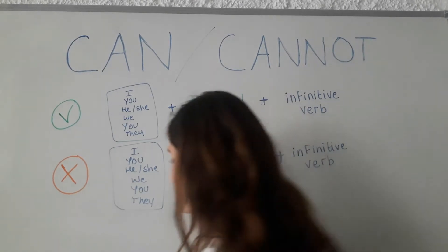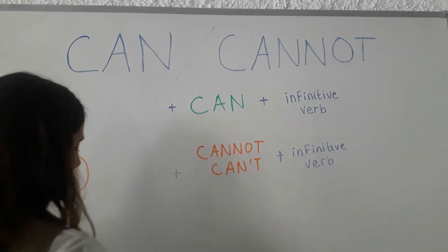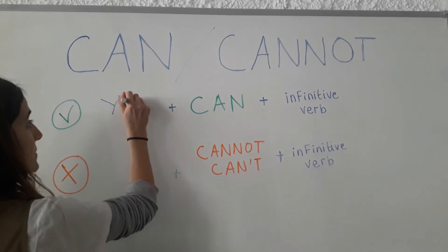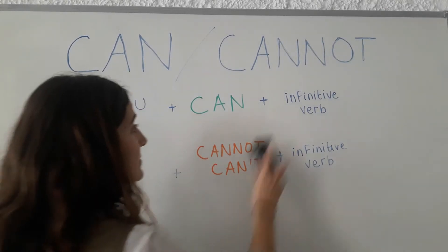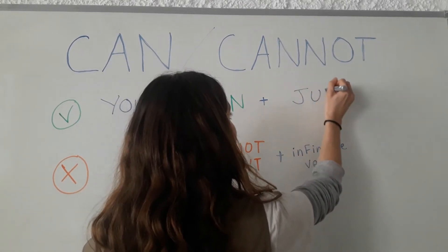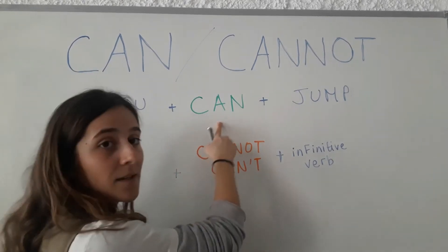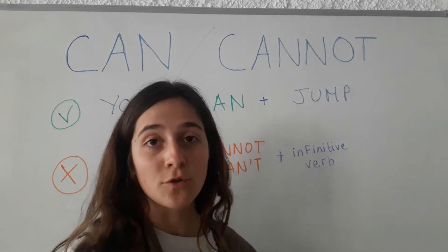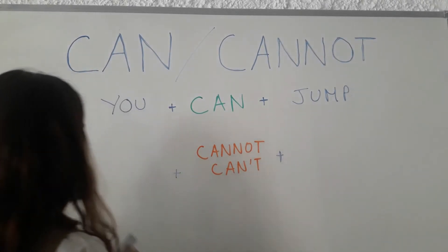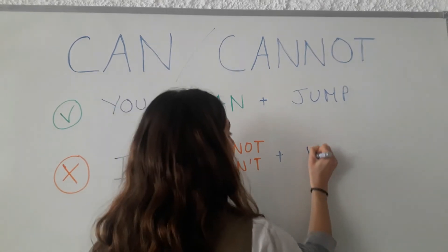I give you an example: you — the pronoun — plus can, plus jump — the verb, which is not conjugated. The same applies for the negative form: I cannot fly, or I can't fly.